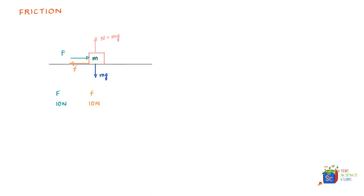If you increase the force to 12 newtons, the friction force also increases to 12 newtons to oppose it, so the box does not move. Increase it to 14 newtons — the box still doesn't move because friction rises to 14 newtons. But there comes a point where the box just starts to move. Let's say 15 newtons is the threshold where any slight increase above that would just start moving the block, because friction can no longer keep up.